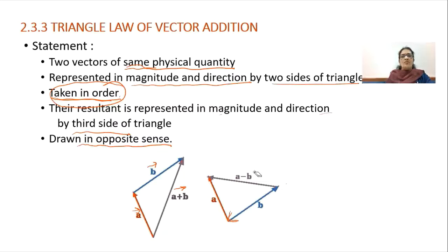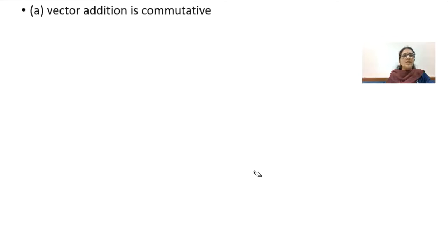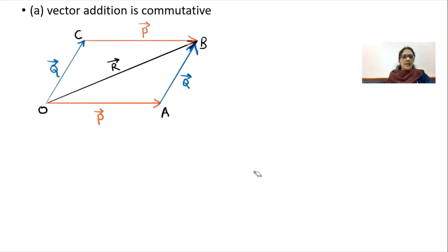By using the triangle law, we will prove two rules for vector addition. The first is that vector addition is commutative. Commutative means that even if we change the sequence of the vectors being added, the resultant remains the same. That is, P bar plus Q bar equals Q bar plus P bar, where both give the same resultant R bar.